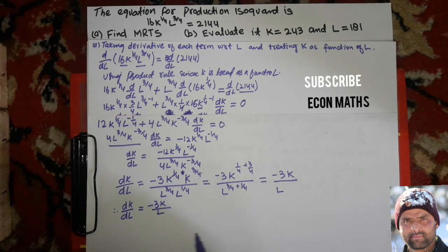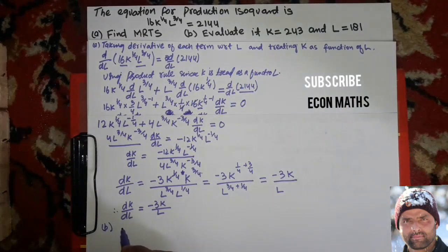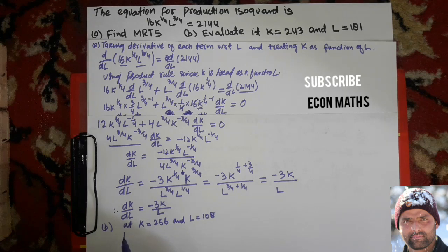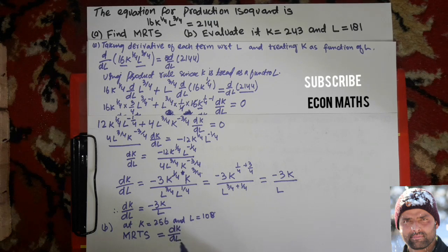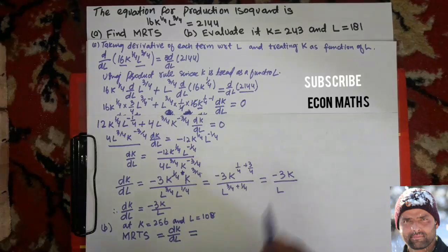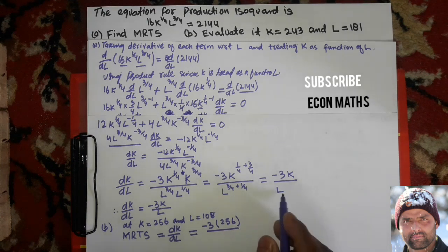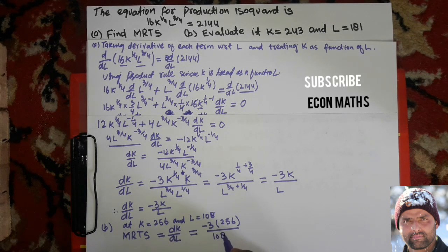This was part A. Now for part B, putting the values of k and L: at k equal to 256 and L equal to 108, the MRTS — marginal rate of technical substitution between capital and labor — equals dk/dL, which becomes minus 3 times 256 divided by 108. Solving this gives minus 7.11.